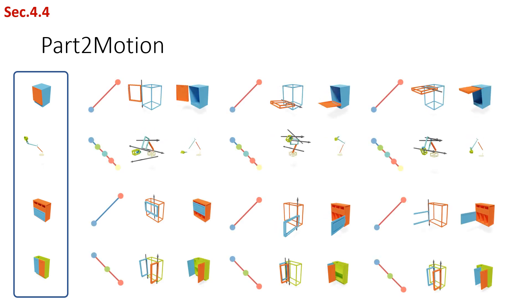The learned prior can be directly used in several conditional generation applications. We first show part-to-motion. Given known node attributes as conditions shown inside the left blue box, our model can complete diverse reasonable motion structures.